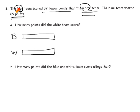So it says the blue team scored 37 fewer points than the white team. So that means this blue team, the bar needs to be shorter. All right, so I'm going to shorten it. And it says it's supposed to be shorter by 37. So all this is supposed to be gone by 37 points. And then it says the blue team scored 69 points. So that means this piece right here is 69.